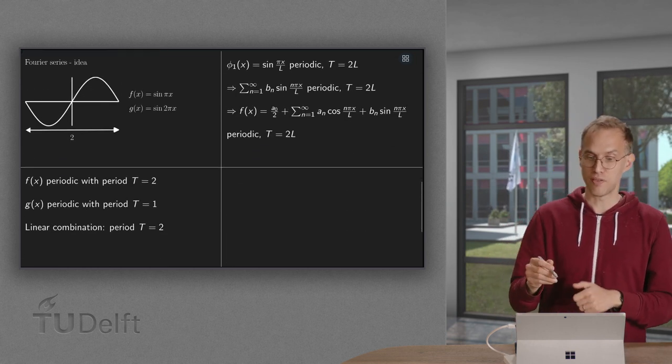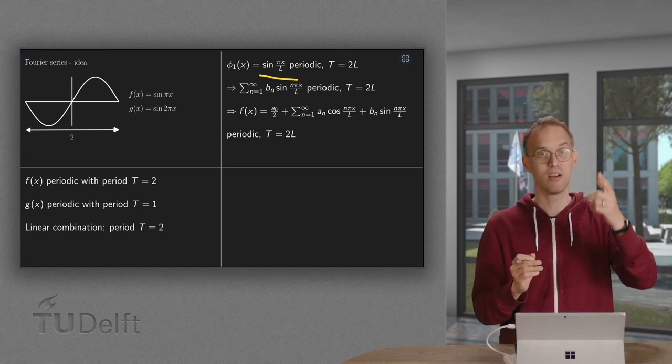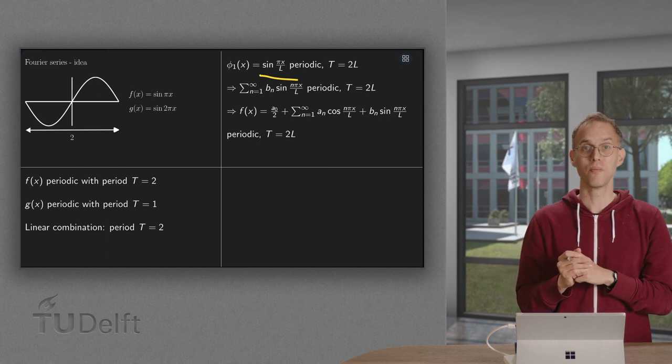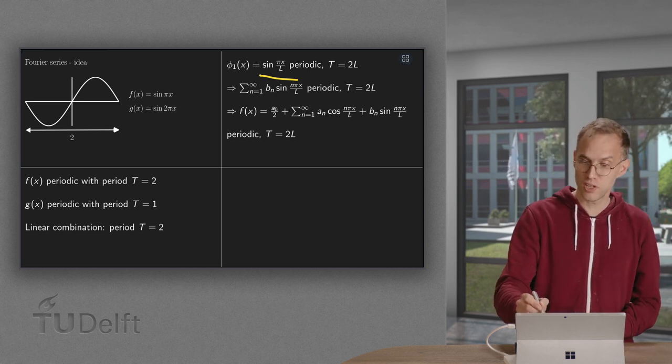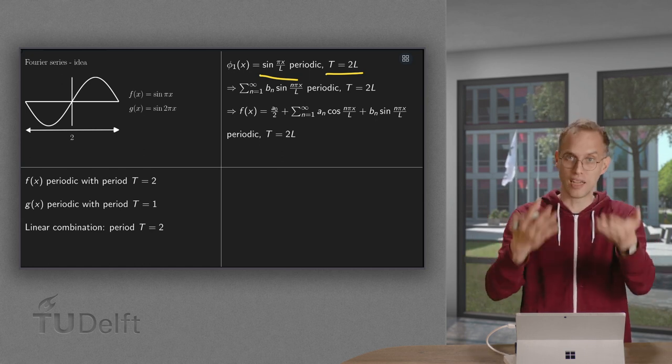So if you have, for example, sin pi x over l, this function is periodic with t equals 2l. If you are 2l further, you are again where you started.